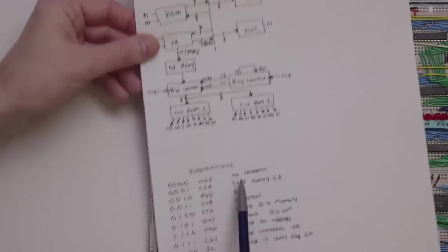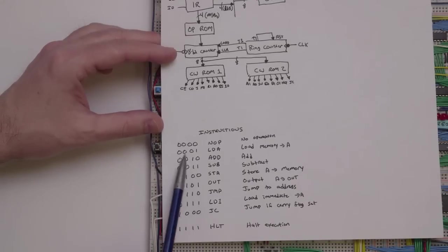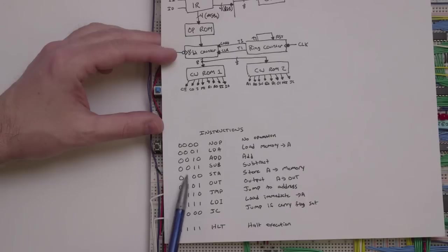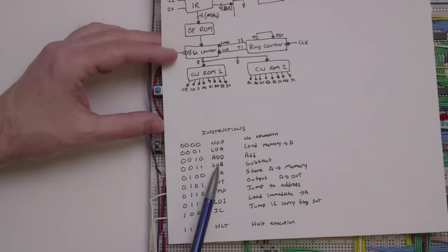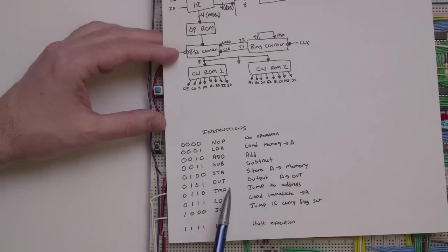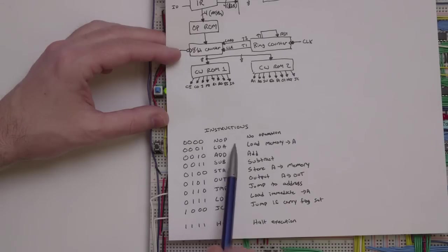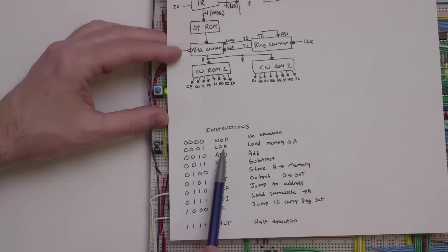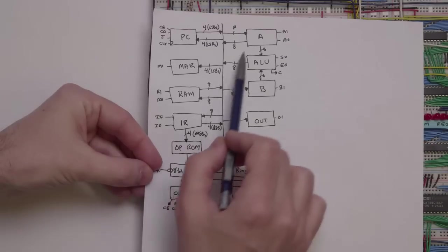The instructions that the computer understands are listed here. This is a list of all the instructions the computer understands. Each instruction has a binary value, which is what we actually program into the computer if we want to use that instruction. There's also a mnemonic — this little two or three-letter identifier we use when writing the program — and then I've called out what each of these things are. The first instruction is a no operation, which basically does nothing, used more for testing.